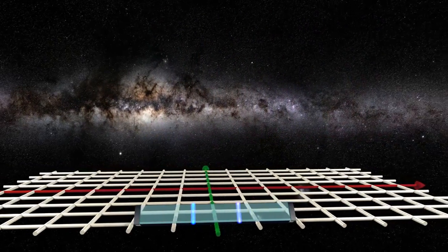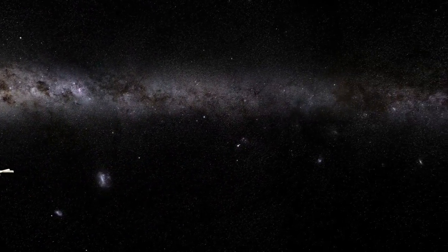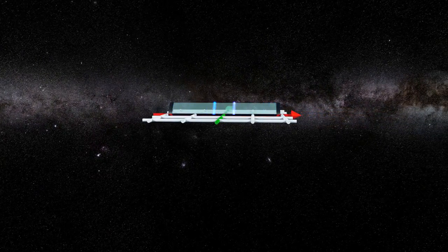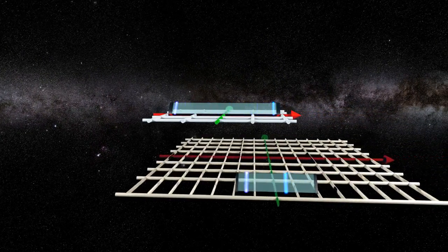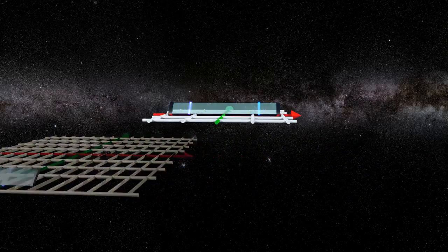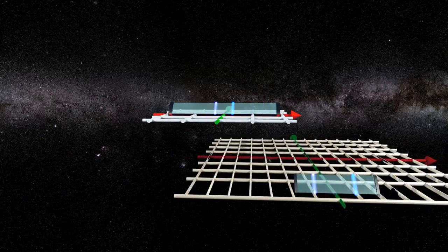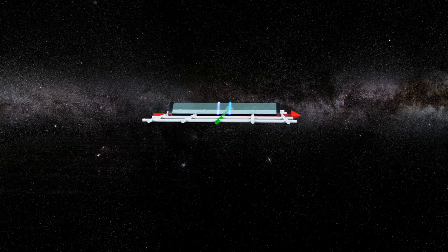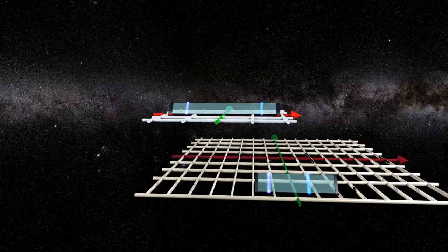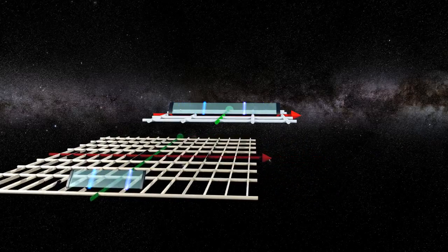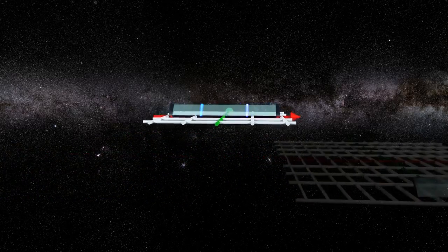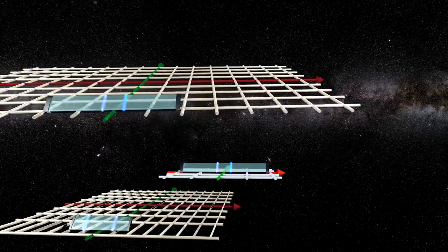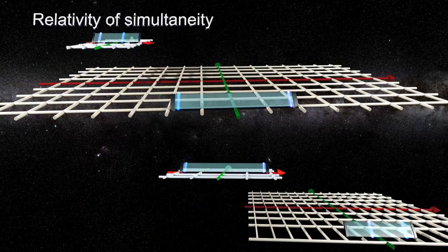Conversely, from the moving frame, the simultaneous reflections in the stationary clock are no longer observed simultaneously either. In general, events that are simultaneous in one frame no longer appear simultaneous in any other frame. Moreover, there are order changes depending on the frame from which they are observed. We say that inertial frames in relative motion experience relativity of simultaneity.